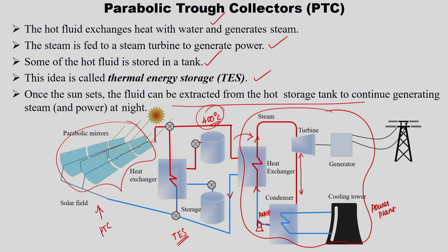When PTC cannot provide 400°C at night, the thermal energy storage system is used. Whenever excess energy is produced, it is stored, and used when there is demand. Cold fluid passes through the heat exchanger, takes heat from the PTC, and the extra heat can be stored in the hot tank. Whenever needed during off-sunshine hours, this stored heat is supplied to another heat exchanger to produce steam. Cold storage can also be charged through the heat exchanger using PTC output.